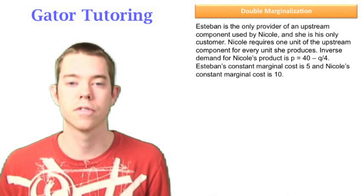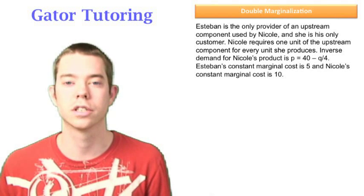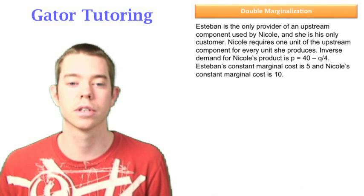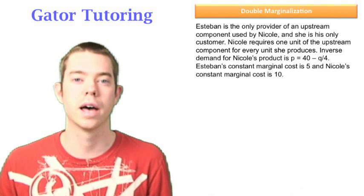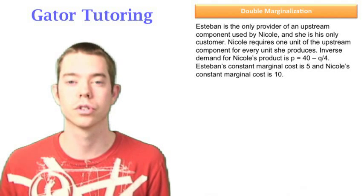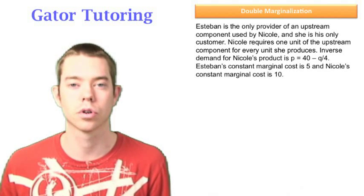It says that Esteban is the only provider of an upstream component used by Nicole and she is his only customer. It goes on to tell us that for each one unit Esteban sells Nicole, Nicole will use that in one unit of her final product. It gives us Nicole's inverse demand and both of their marginal cost.